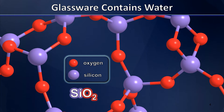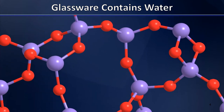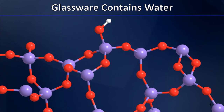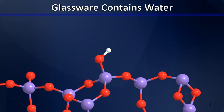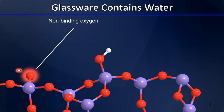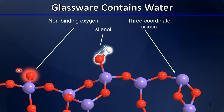But let's see what happens as we move to the edge of the glassware and consider how this network of silicon and oxygen atoms terminates. As we approach the surface, you notice some differences. Most notably, we see some non-binding oxygens — oxygens that only have one bond and therefore carry a negative charge. We also find silanol groups in which an OH is bonded to a silicon; the hydrogen helps terminate the chain but also produces a good hydrogen bonding group. And third, we have three-coordinate silicon atoms at the edge, which carry a positive charge.